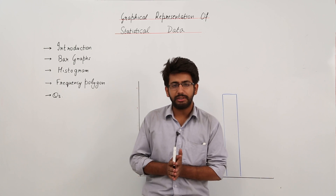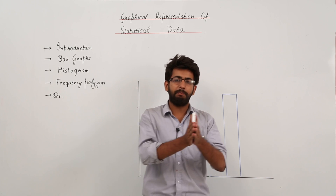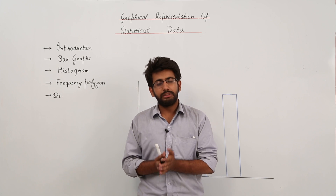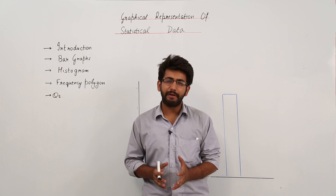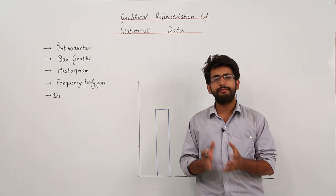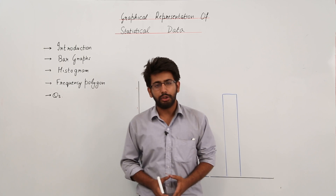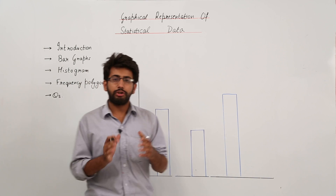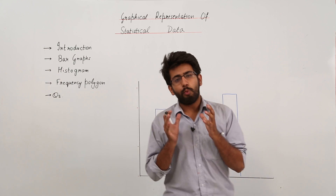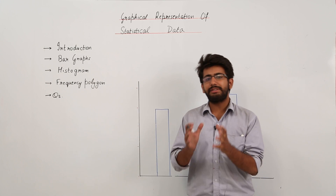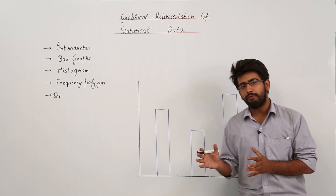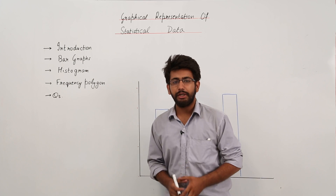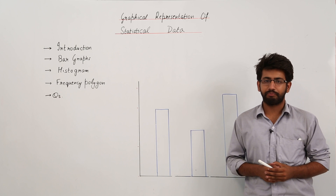With graphical representation, when we represent data in the form of graphs or pictorially, it leaves a profound effect on the observer. It is very easy and convenient to interpret and manage the data. The only reason we represent data in graphical form is that it is much more convenient to read and study.